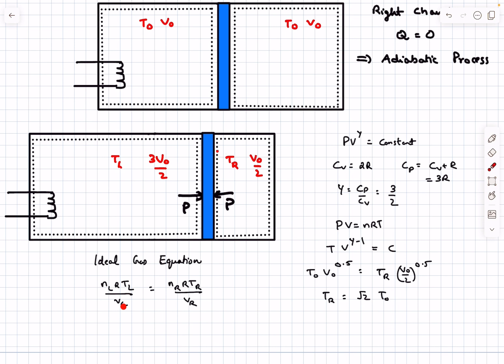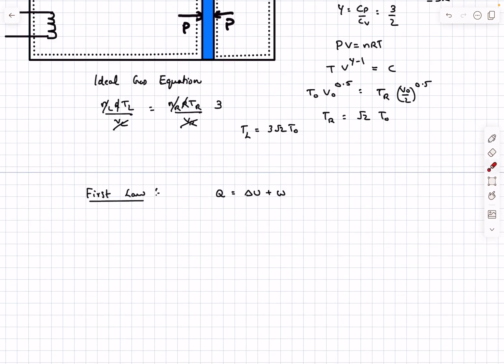Using the fact that pressure on either chamber has to be the same, we can write nRT/V is a constant. The number of moles is 1, so TL/VL = TR/VR. Since VL/VR = 3, we get TL = 3TR = 3√2 × T0.